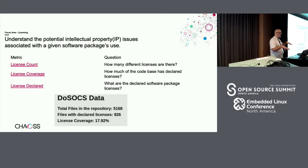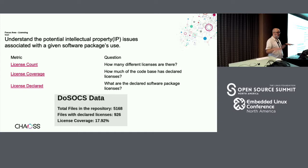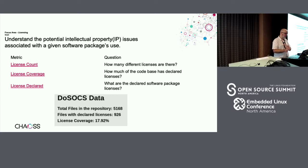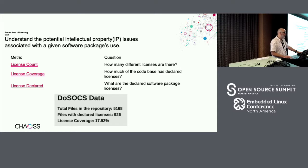We also have licensing. The goal is to understand intellectual property issues, which is a separate set of concerns for risk. We look specifically at the number of licenses and coverage — how many files in this system actually declare the license at the file level. Augur SBOM gives us a set of statistics for a particular repository: total number of files, number with licenses declared — that's your license coverage. That may or may not be sufficient depending on your IP concerns, but at least with the tools we're building, you can know what that is.